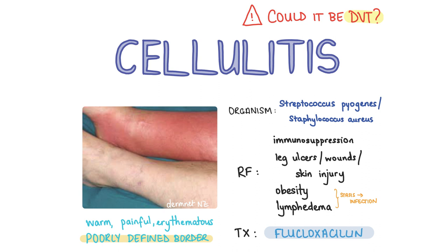In terms of management, supportive care should be given including rest, leg elevation, sterile dressings and analgesia. Oral antibiotics like flucloxacillin or erythromycin are also given to treat cellulitis. If the patient is systemically unwell or there is a severe infection, he or she will need to be admitted to hospital for fluids, IV antibiotics, oxygen and monitoring.